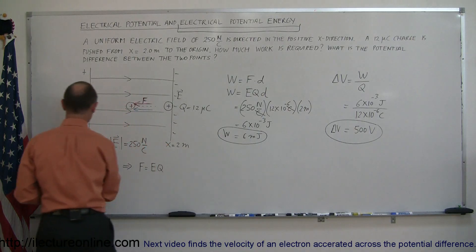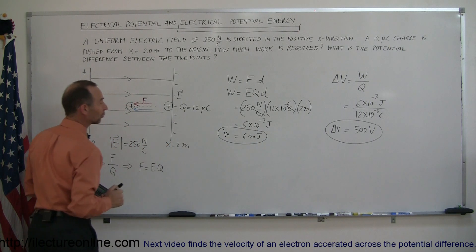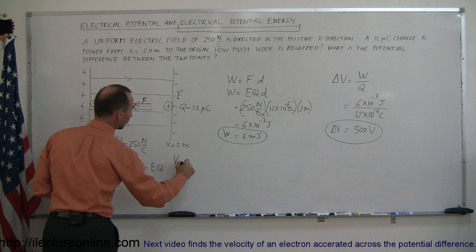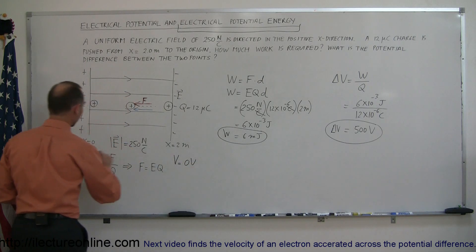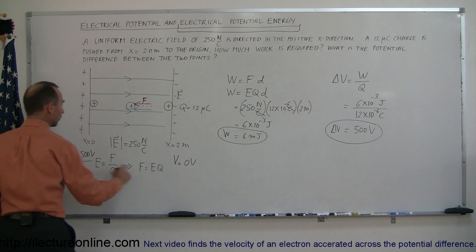Which means that at x equals 0, the potential is 500 volts higher than x equals 2 meters. So if at x equals 2 meters, the potential V is equal to 0 volts, then over here the potential would be equal to 500 volts higher, or 500 volts.